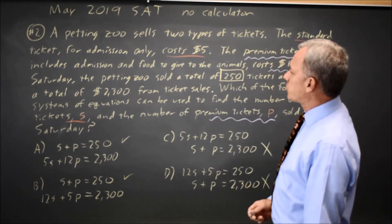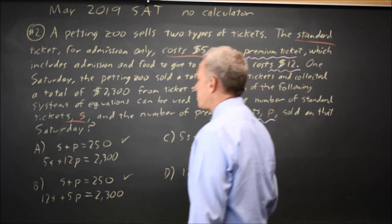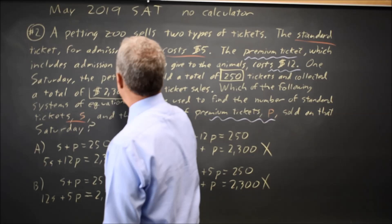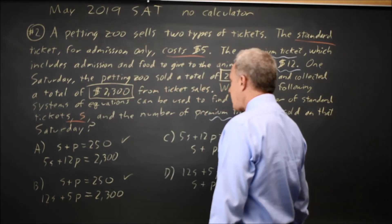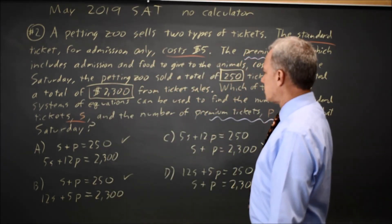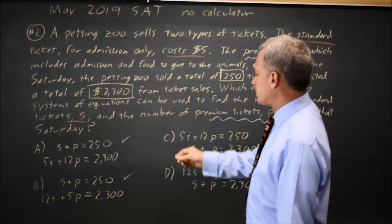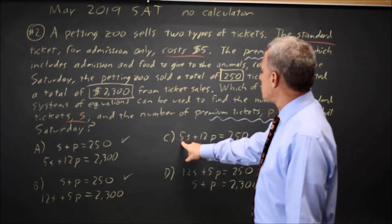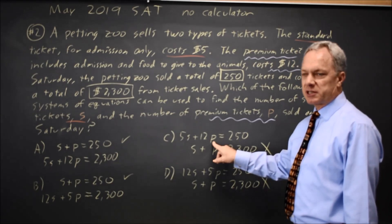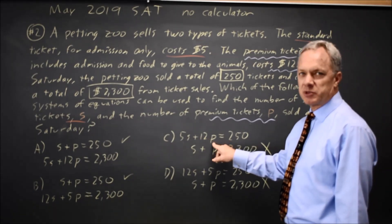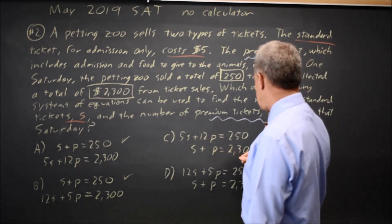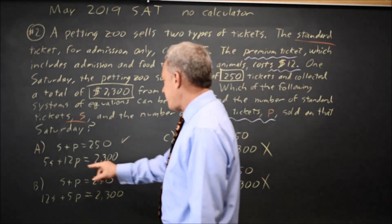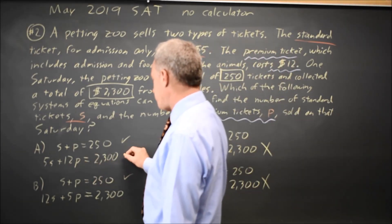They also say the total price, the total amount sold in tickets, is 2300. And since standard tickets are $5 each, 5S plus the total amount for premium tickets at $12 each times the number of premium is 12P, should add up to the total amount of money, which is 2300.